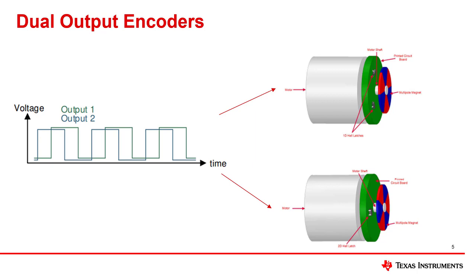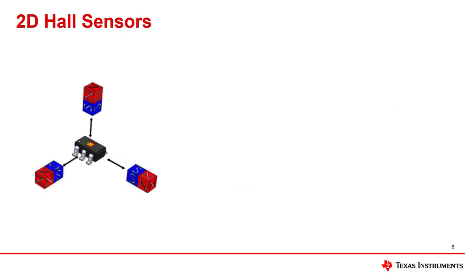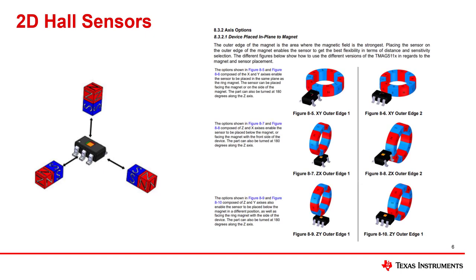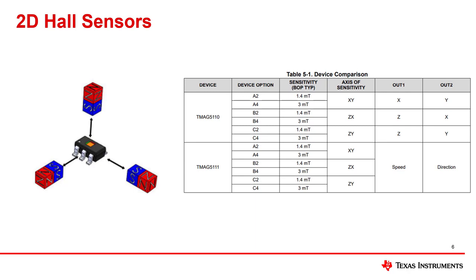The two hall sensing elements inside 2D latches, like TMAG5110 and TMAG5111, are naturally orthogonal to each other, meaning that they are already 90 degrees apart. The main challenge of using a dual latch integrated device is selecting which two sensing directions would be ideal for your mechanical implementation. In section 8.3.2 of the TMAG51x datasheet, there are various mechanical orientations listed along with the suggested sensing direction to help simplify the selection process. Since TMAG5110 and TMAG5111 are offered in various combinations for the two sensing directions, simulation tools can help designers determine which two directions would be ideal for different mechanical implementations.